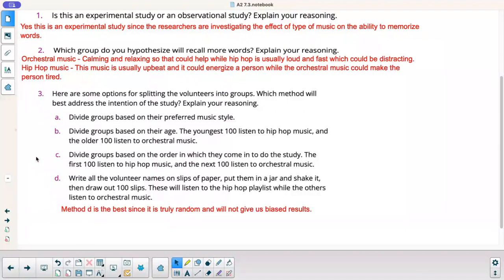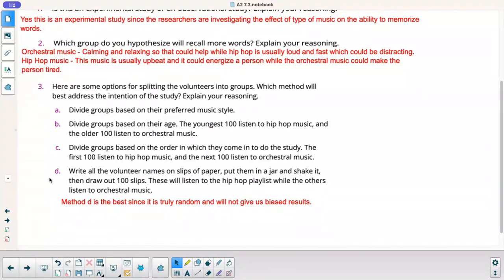C, divide groups based on the order in which they came in to do the study. First hundred listen to hip hop. Next hundred listen to orchestral music. Not bad. It is more random than the other ones where you'll have subgroups. And then D is truly random. Write all the volunteer names on slips of paper. Put them in a jar and shake it. Then draw out a hundred slips. These will listen to hip hop playlists while others will listen to orchestra. I think D is probably the best since it is truly random and that will give us unbiased results.